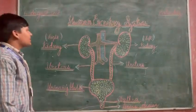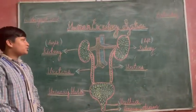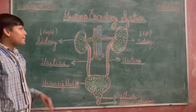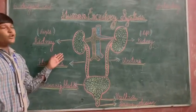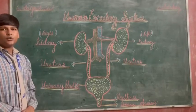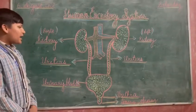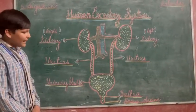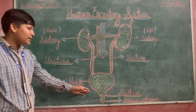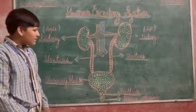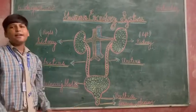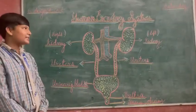The kidney filters useful substances and harmful substances. The kidney absorbs useful substances and removes harmful substances. The urethra removes waste and some fluid pressure, through the external opening, and you feel relaxed.